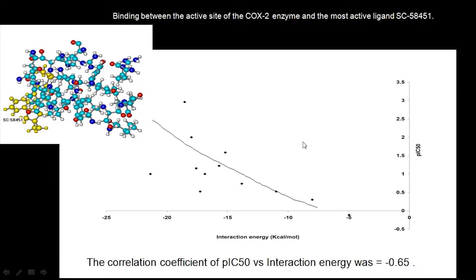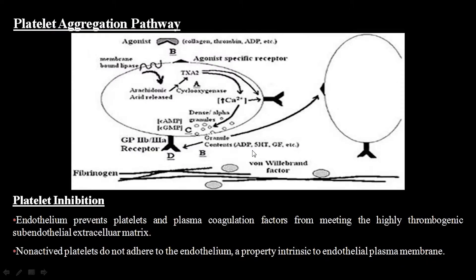What is the use of this? Suppose we have another molecule which we think we can design — one that may be more active — we can bind it to this COX-2 enzyme and see where the binding or interaction energy comes, and then predict its IC50 value. So this can be used as a nice predictive tool.